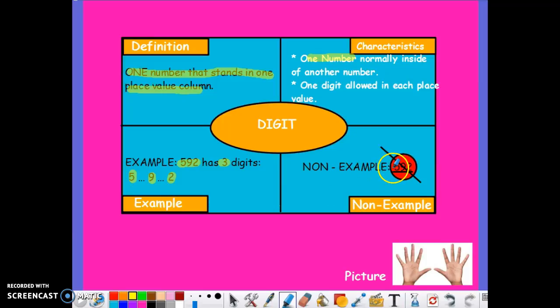However, a non-example is the fact that 592 altogether is not a digit. Think of fingers. Each individual finger that we have has its own individual name, just like the place value chart.